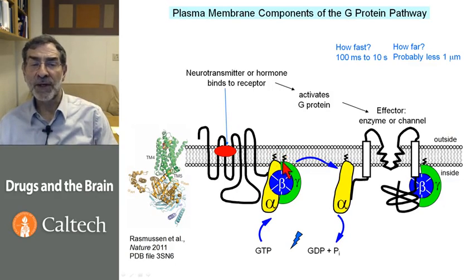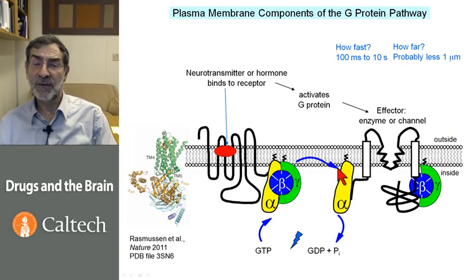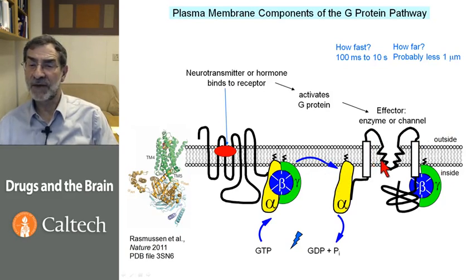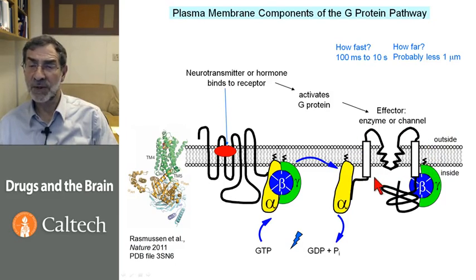Usually the G-protein is anchored in the membrane by lipid tails. The G-protein changes shape so that it liberates GDP — guanosine diphosphate — and binds GTP. The G-protein then moves not very far, less than a micron, and sometimes there's a complex containing all of these molecules, and it activates an effector. The beta-gamma subunits can also activate effectors, and all of this stays close to the membrane because the G-protein subunits and most effectors are membrane proteins.